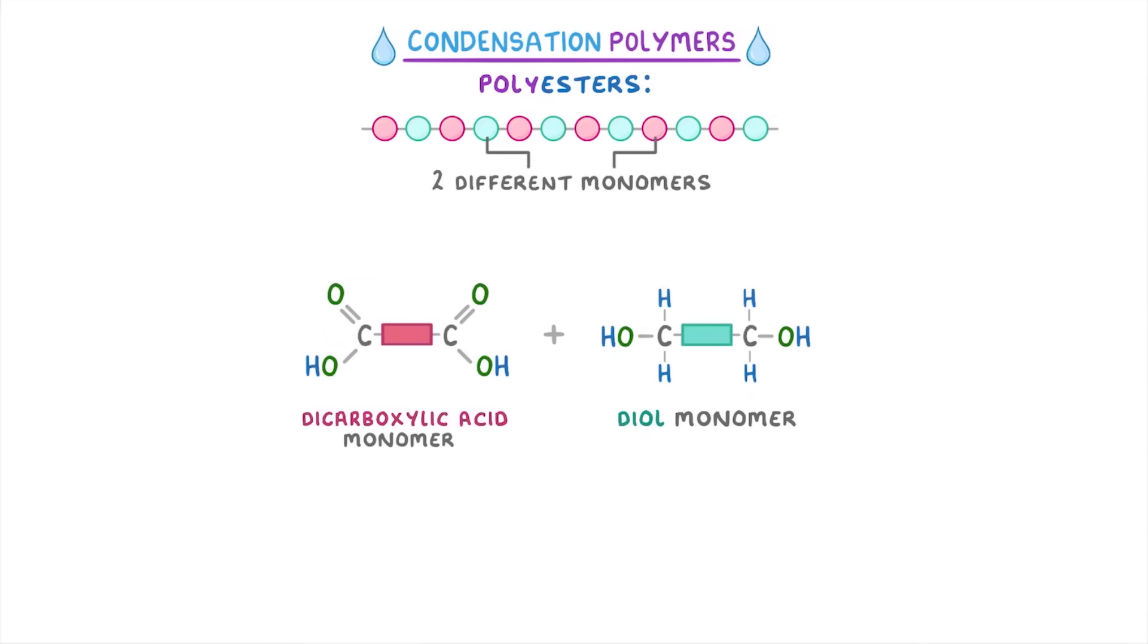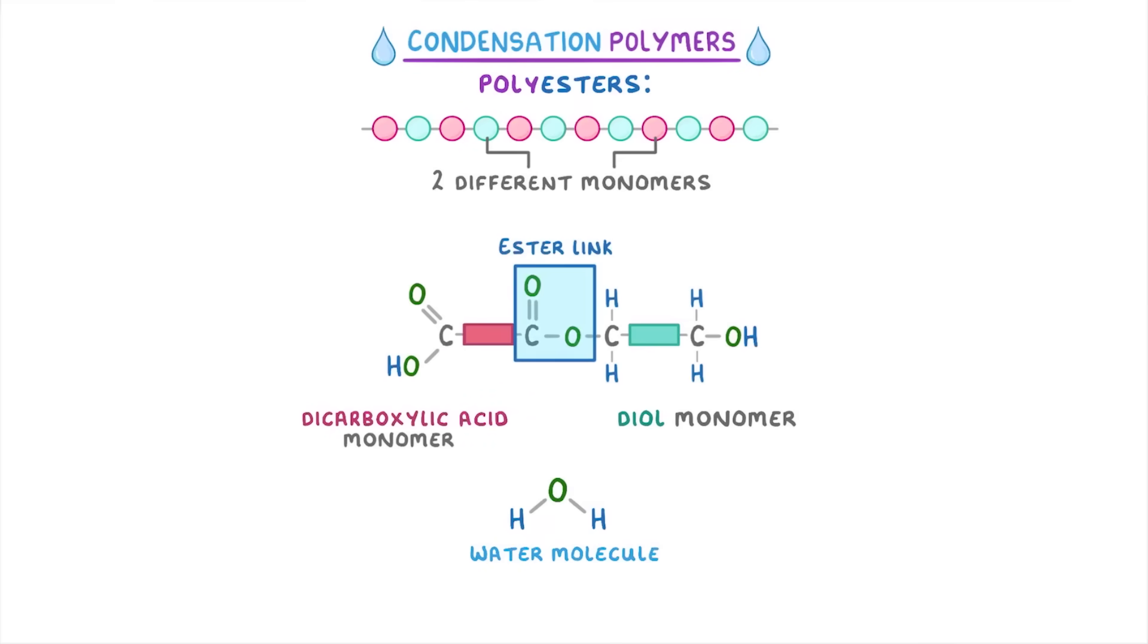In order for the two monomers to combine, the dicarboxylic acid has to give up its OH group and the diol gives up a hydrogen atom from its OH group. When these three atoms combine, they form a water molecule. This leaves this carbon from the dicarboxylic acid to bond directly to this oxygen from the diol, and it's this bond that we call the ester link.